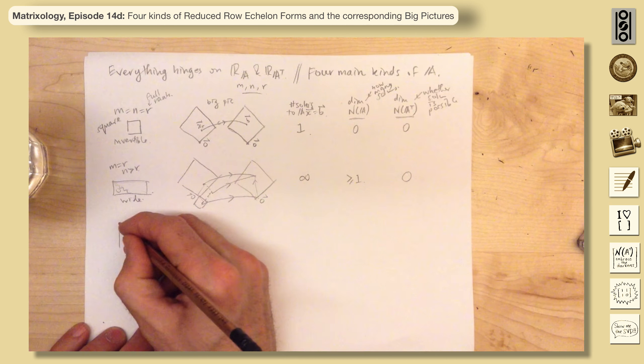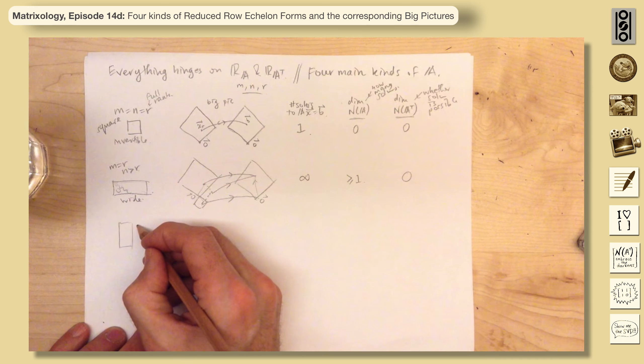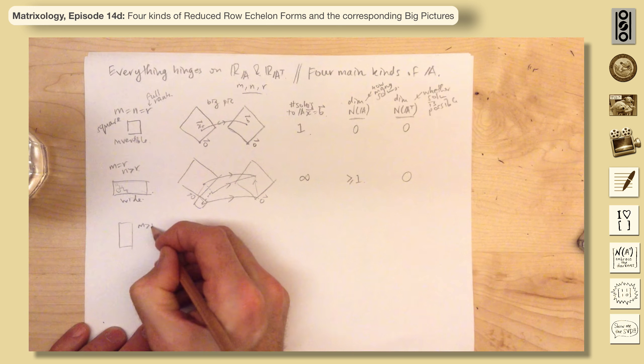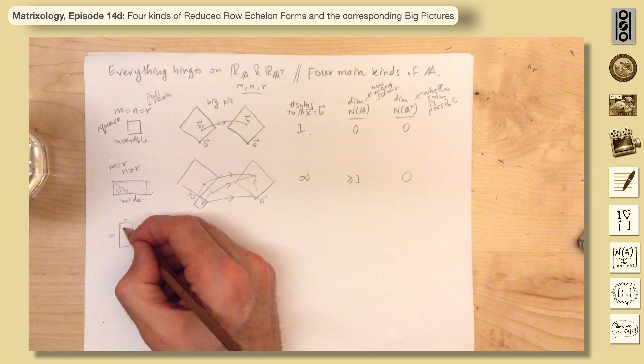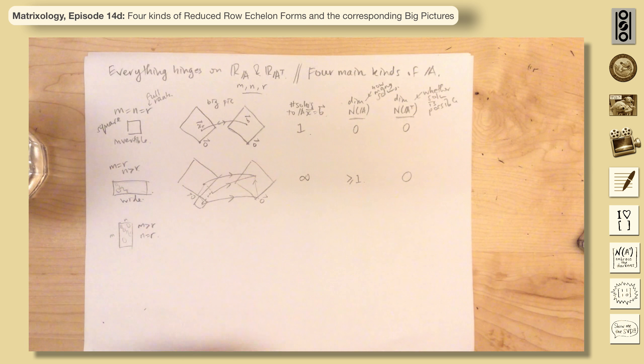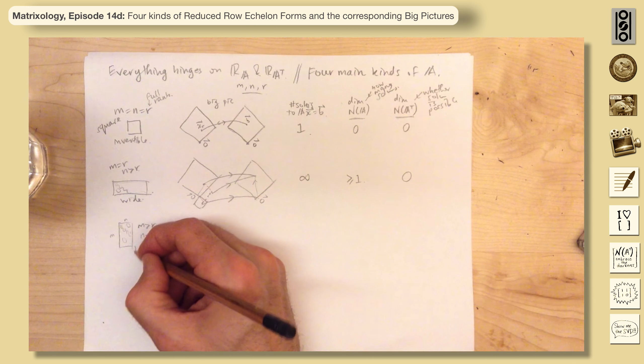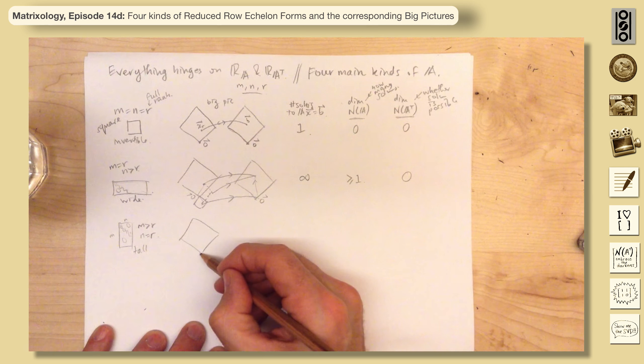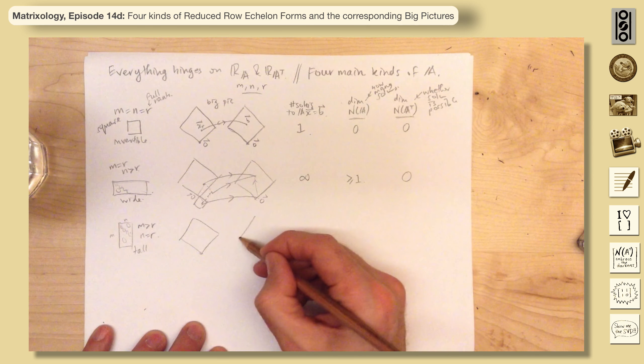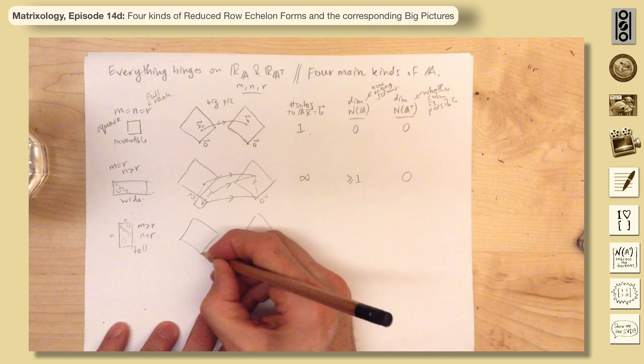So let's have a tall one. M is now greater than R, but N is equal to R. In a row reduced form, if you think of this as N in this direction and M in this direction, actually it has to be all zeros here and all zeros here and ones down here, which is kind of cool. So this is a tall one. And in this case, now we have a left null space. We have no null space. Well, the null space is trivial, as we like to say. Here's zero again. Here's zero.